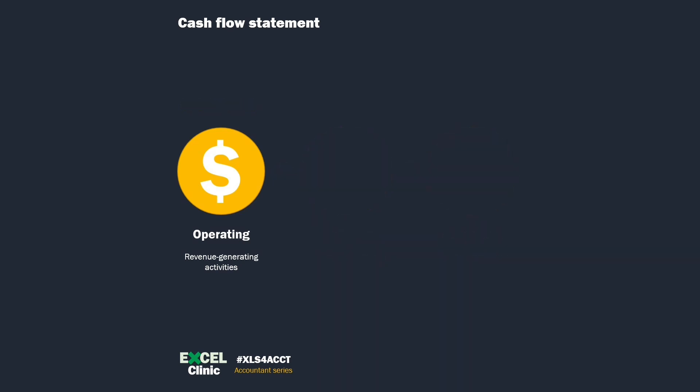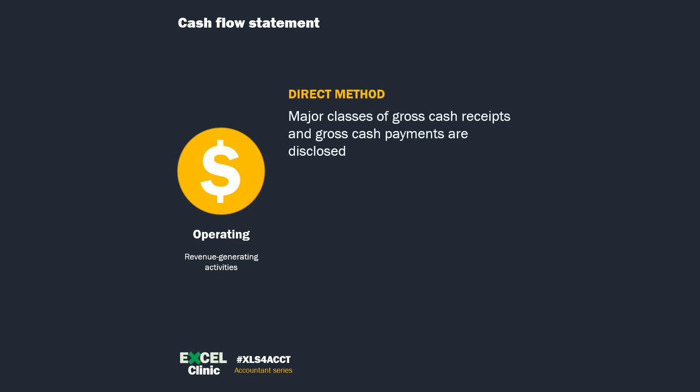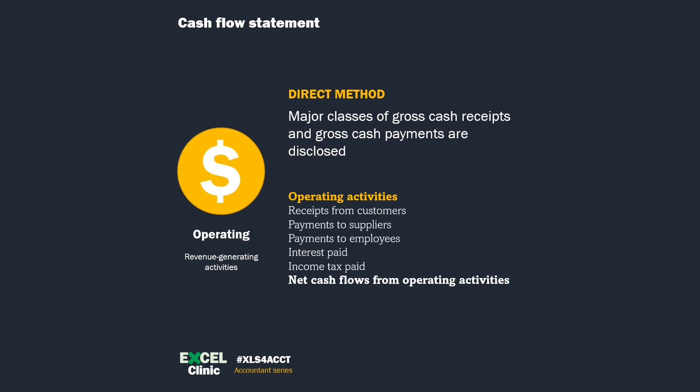The choice of direct or indirect is only applicable to operating cash flows. For investing and financing, there is no choice — you have to use the direct method. What the direct method does is group gross cash receipts and payments into major classes for disclosure. The standard setters encourage entities to adopt the direct method as it provides more useful information.